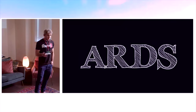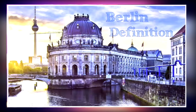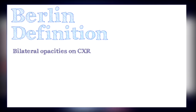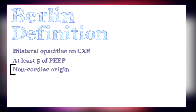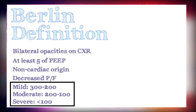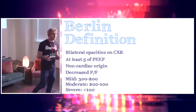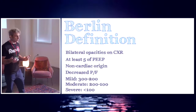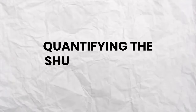If you ask most of our trainees what ARDS is, they start to talk about the Berlin definition. Essentially what you're talking about is bilateral opacities on the chest x-ray, 5 of PEEP, non-cardiac origin, and then your PF ratio divided into mild, moderate, and severe. When you think about this, the first three variables are essentially just ways to exclude mimics of ARDS, and then you're just down to a PF ratio — quantifying the shunt fraction.